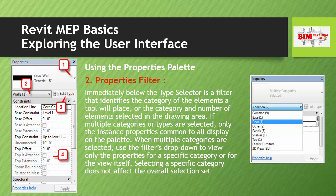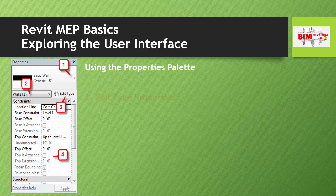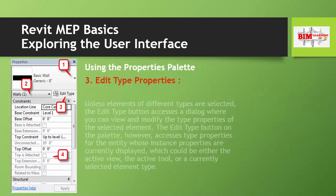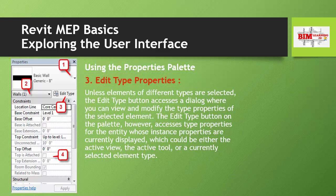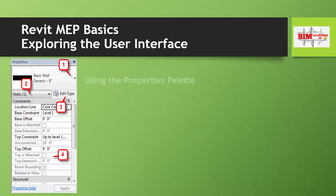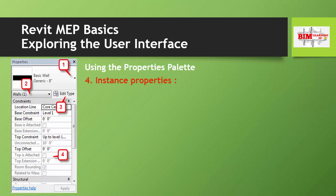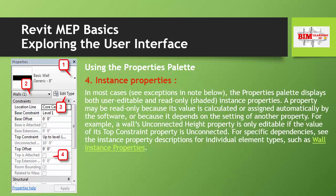Point three — Edit Type Properties: unless elements of different types are selected, the Edit Type button accesses a dialog where you can view and modify the type properties of the selected element. The Edit Type button on the palette accesses type properties for the entity whose instance properties are currently displayed — which could be either the active view, the active tool, or a currently selected element type.